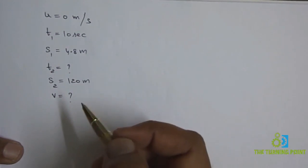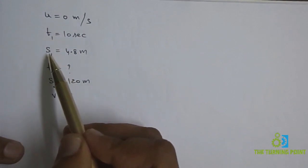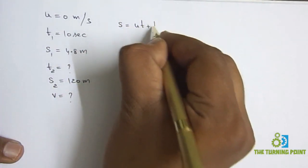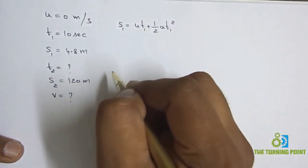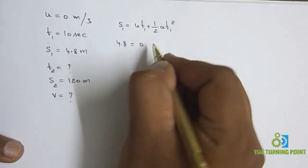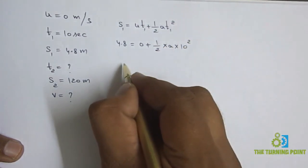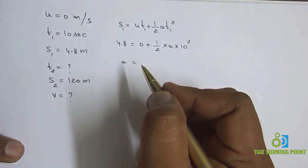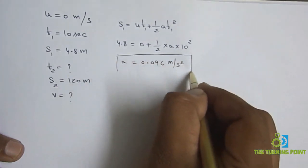For any problem, the first thing to calculate is acceleration. We have initial velocity u, time t, and displacement s, and we want to find acceleration. The equation is s = ut + ½at². So s1 = 4.8m, initial velocity = 0, giving 4.8 = 0 + ½ × a × 10². Solving: a = 4.8 / 50 = 0.096 m/s².